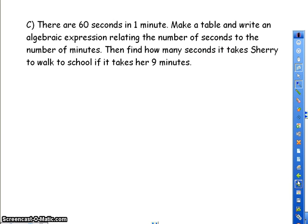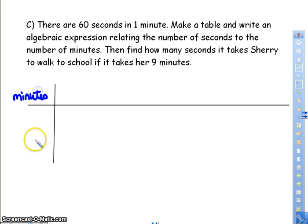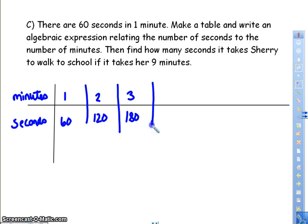And here's our next problem. Since there are 60 seconds in 1 minute, make a table and write an algebraic expression relating the number of seconds to the number of minutes. Then find how many seconds it takes Sherry to walk to school if it takes her 9 minutes. So I'm going to create my table. And what you're doing is you're taking your minutes and you're converting them to seconds. So I have, and I'm going to put 1, would be 60 seconds. 2 minutes would be 120 seconds. 3 minutes would be 180 seconds, and so on. And I want to know n.